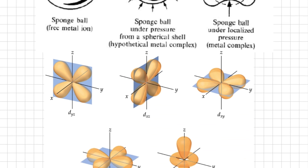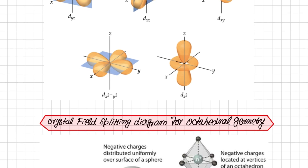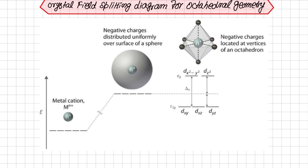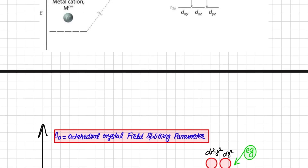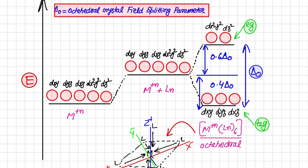We have seen the various shapes of d orbitals: dxy, dyz, and dxz, which are the in-between-the-axis orbitals, and dx²-y² and dz², which are the on-the-axis orbitals. In the last lecture we covered only octahedral geometry, but today we will see the comparison and introduce additional terms that will be used in subsequent lectures.